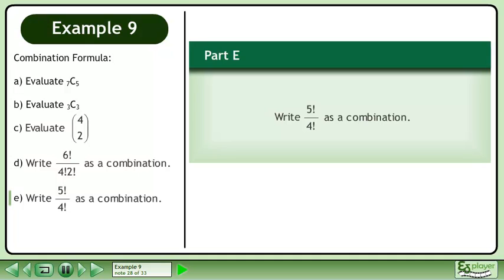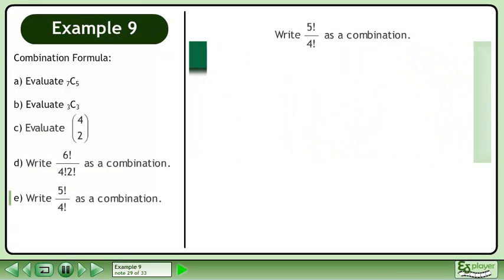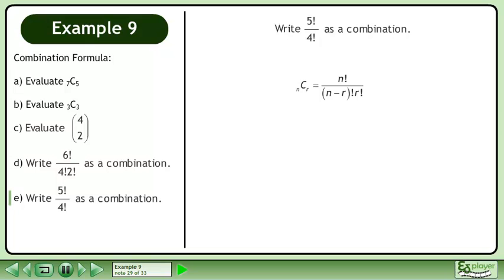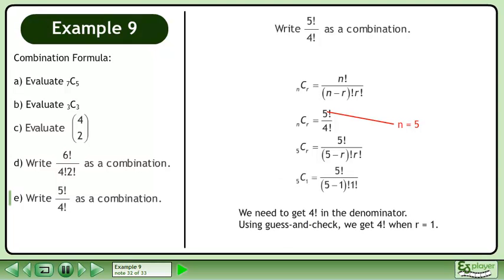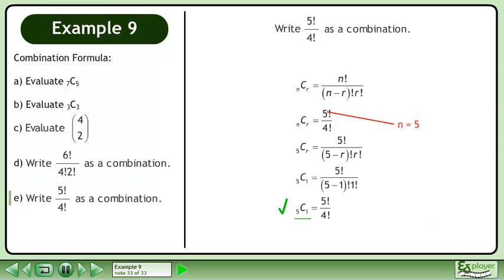In Part E, write 5 factorial over 4 factorial as a combination. Write the combination formula. Rewrite the expression on the right side. By comparison with the combination formula, we can identify n equals 5, but we can't identify r directly. We need to get 4 factorial in the denominator. Using guess and check, we get 4 factorial when r equals 1. The answer is 5 choose 1.